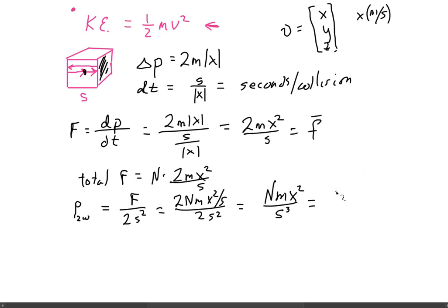And that becomes N, let's see here, NM nu squared, nu squared being the velocity of all three components, over 3V.